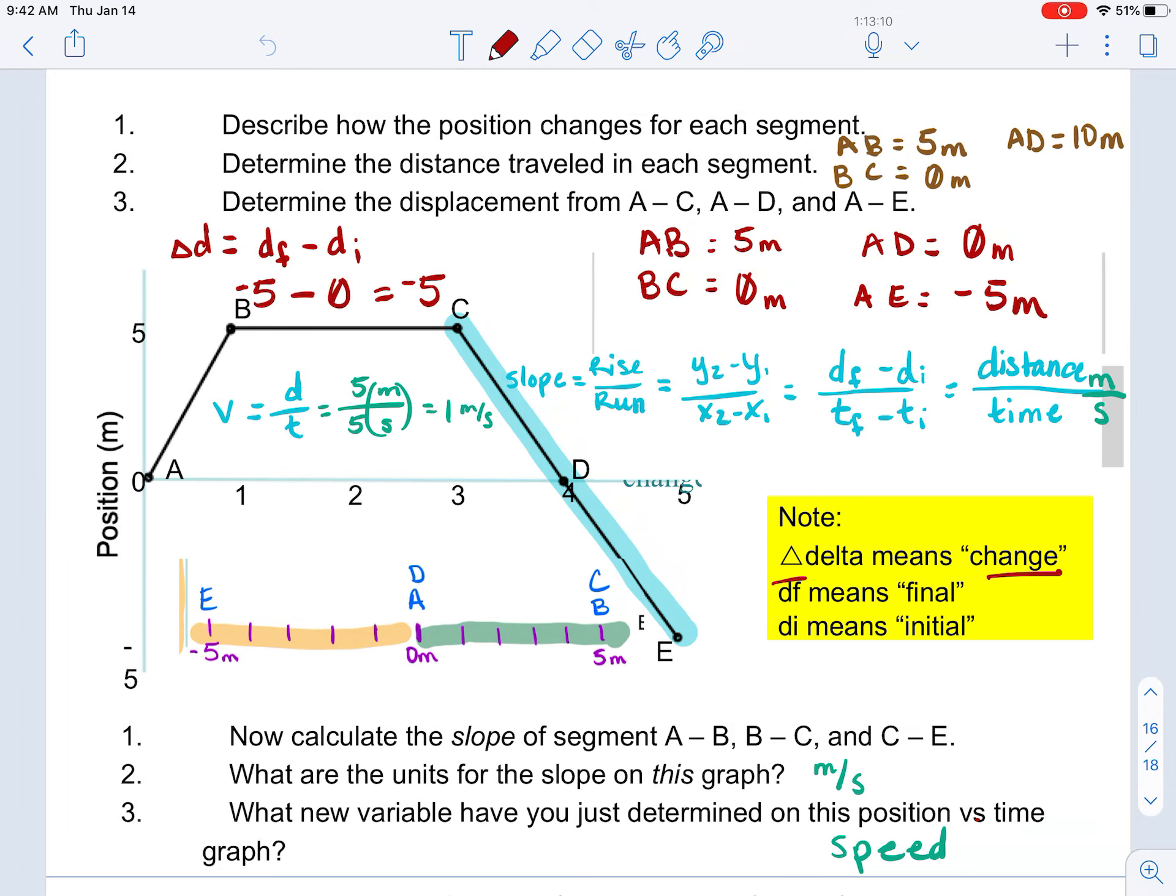Location AE is actually what I currently have written out on the screen here over on the left-hand side. I have position E is a negative five. So, my final position is a negative five minus position A is zero. So, minus zero. Negative five minus zero gives me a displacement of negative five meters, which means that I am located five meters in the negative direction from where I started.